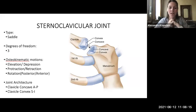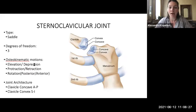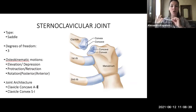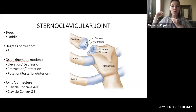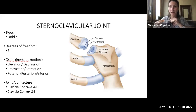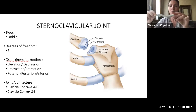The sternoclavicular joint has three possible degrees of freedom — three osteokinematic movements. These are elevation and depression, protraction and retraction, and rotation or spinning movement of the clavicle — anterior spin and posterior spin. Osteokinematically, these are the gross bone movements we can observe.